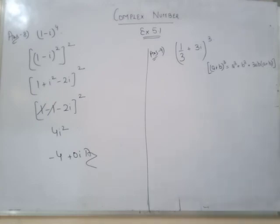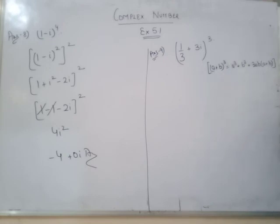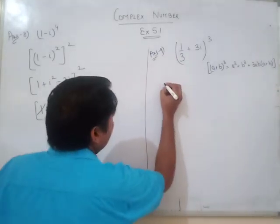Answer number 9: 1 by 3 plus 3 iota cubed. Using the a plus b formula, 1 by 3 plus 3...